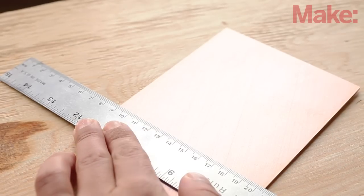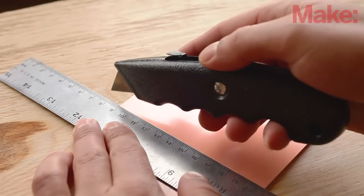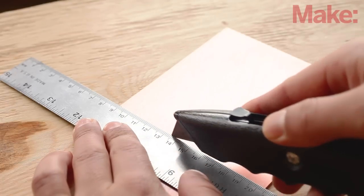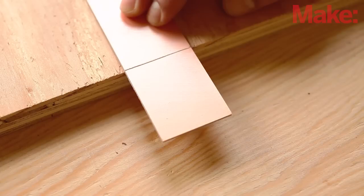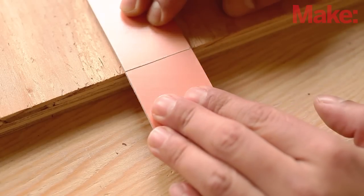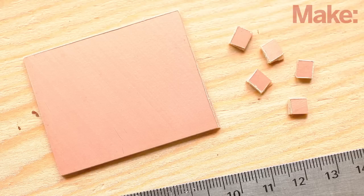Now for the circuit board. Use a straight edge, a utility knife, and the edge of a table to score and snap a five by four centimeter rectangle from the copper clad board. This will be your ground plane. Next, score and snap five small pads. These will be glued to the board to create mounting points for component leads which are not connected to the ground plane.